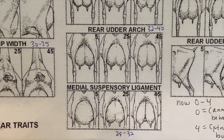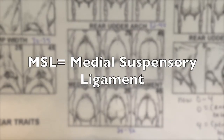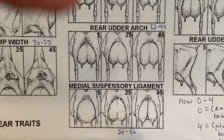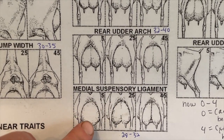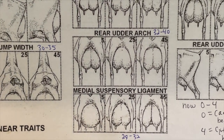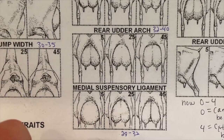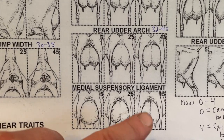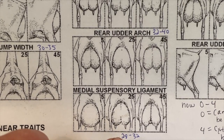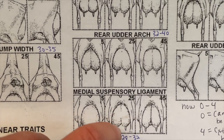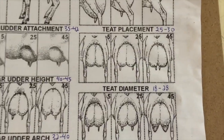The medial suspensory ligament (MSL) is very important — it's what holds up your doe's udder for its lifetime. If a doe doesn't have a good MSL, she's not staying in my herd. The 25-point doe has a pretty nice one you can see clearly; the 5-point is completely absent and that udder will be floppy and fall apart with use; and the high-point is super tight. We're looking for about 28 to 32 points, though I'd probably be happy with a 25 too.